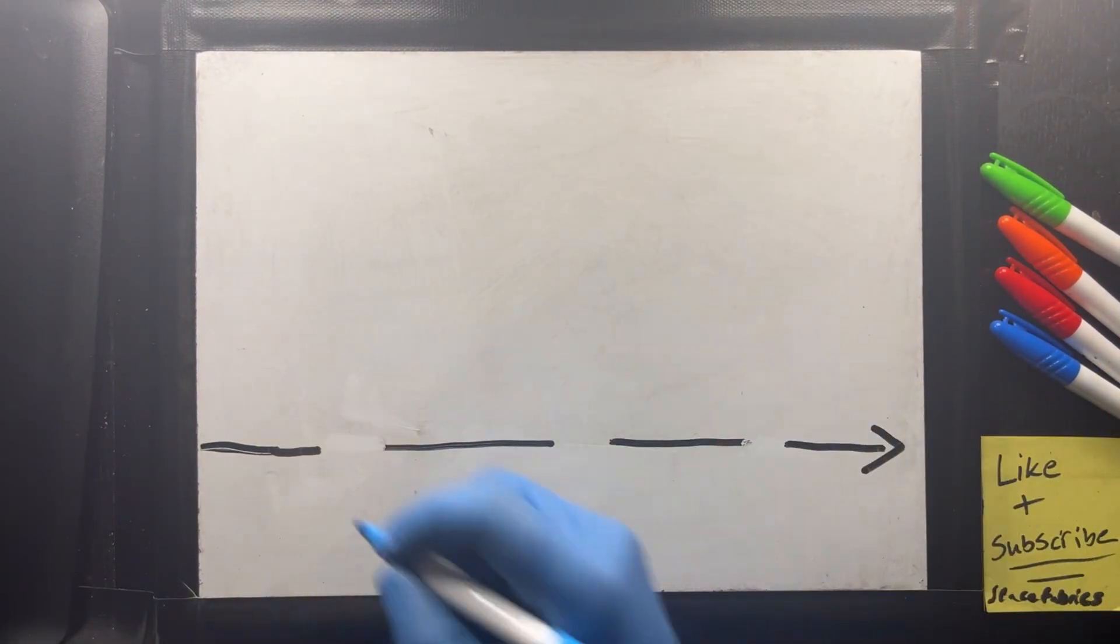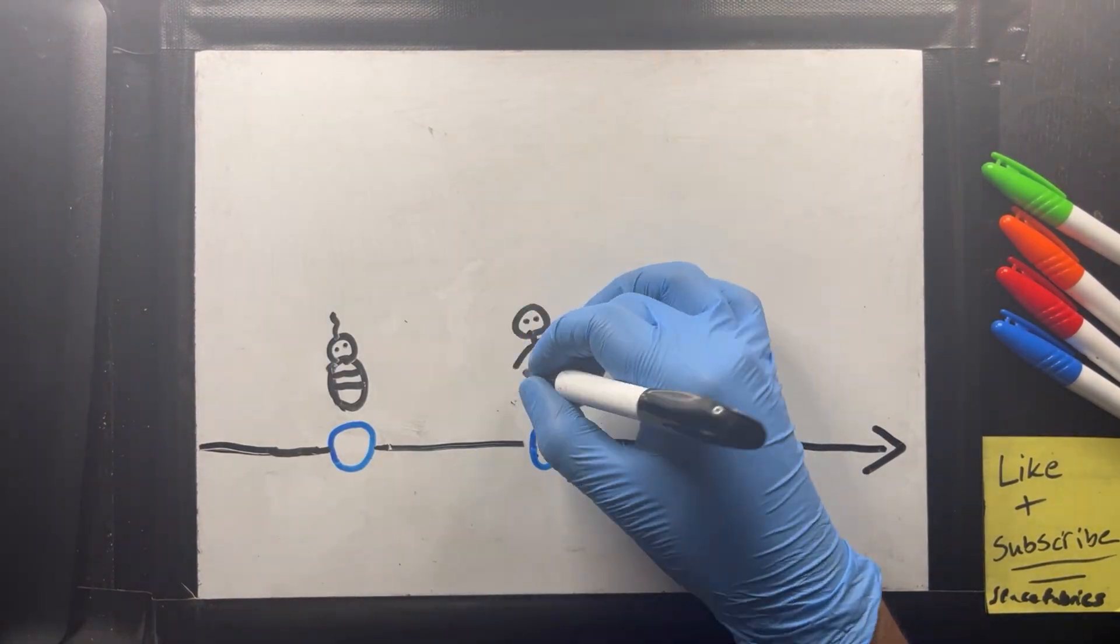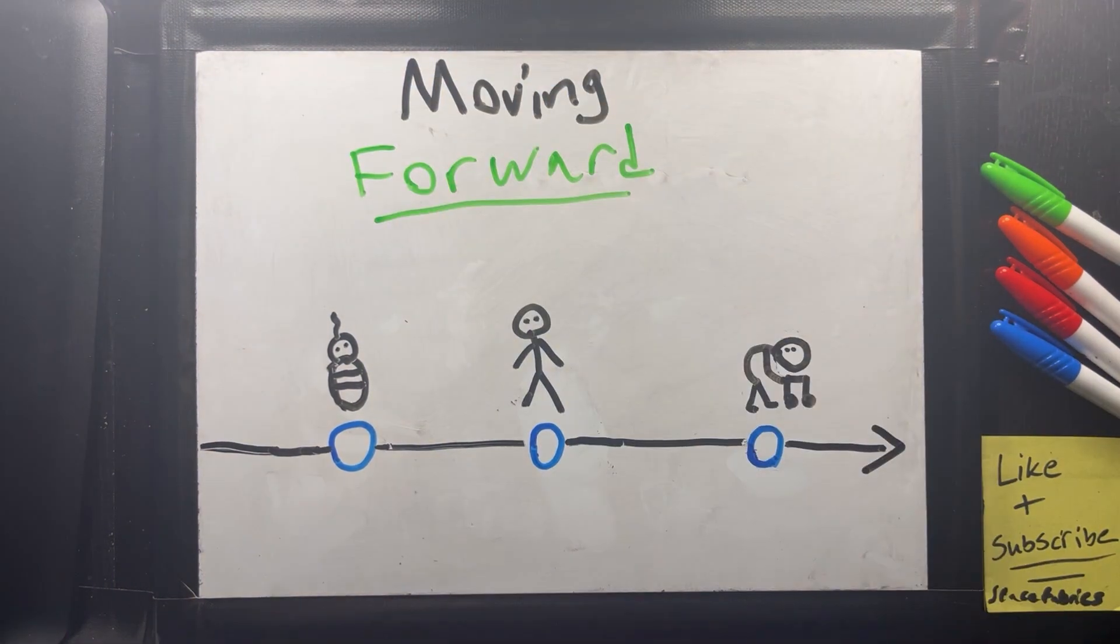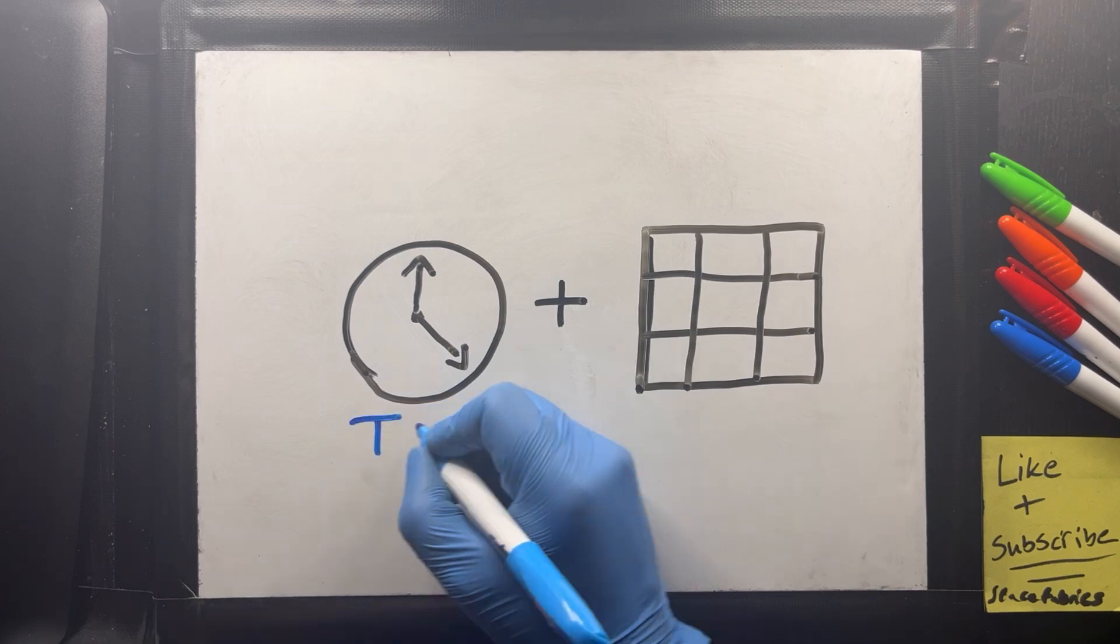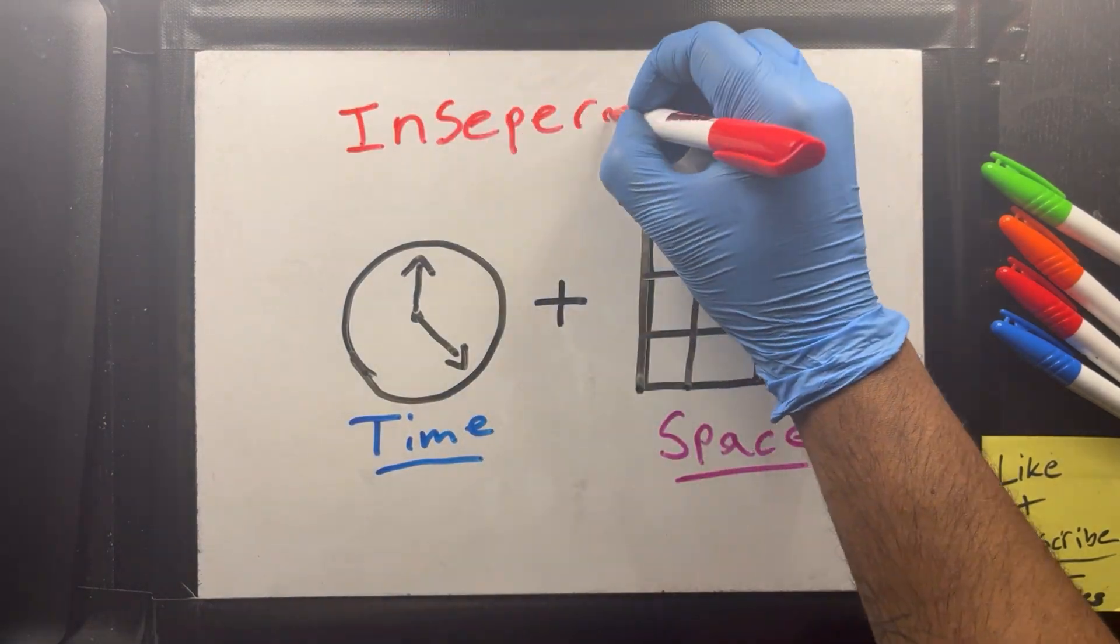Everyone right now is moving forward through time constantly, minute by minute, second by second. Time is an aspect of the universe that is inseparable from space, meaning if you change where you are in time, you change where you are in space.